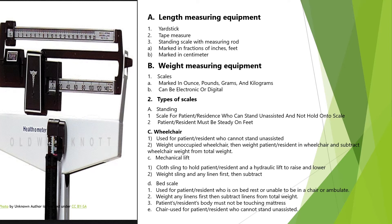Wheelchair Scale: used for a patient or resident who cannot stand unassisted. Weigh the unoccupied wheelchair first, then weigh the patient or resident in the wheelchair and subtract the wheelchair weight from the total weight. Mechanical Lift: uses a cloth sling to hold the patient or resident and a hydraulic lift to raise and lower. Weigh the sling and any linen first, then subtract.